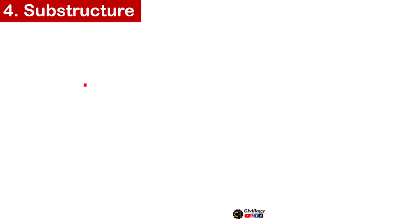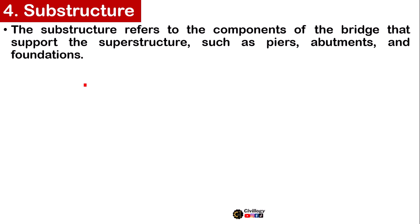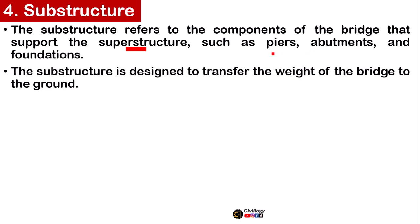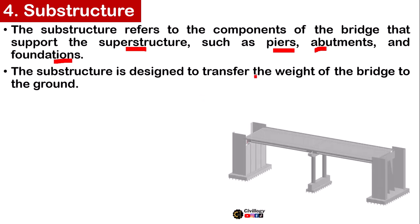Fourth, we have the Substructure. We have discussed the parts of the superstructure which include the deck, beams or girders, and arches. The substructure is defined as the components of the bridge that support the superstructure, such as piers, abutments, and foundations. The substructure is designed to transfer the weight of the bridge to the ground.